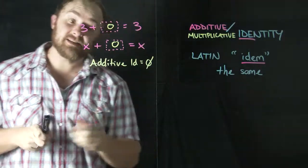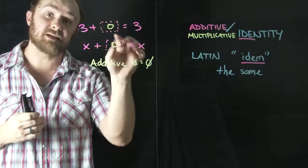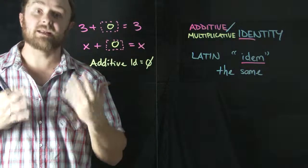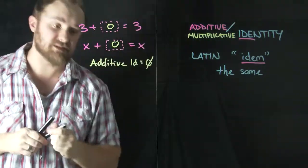Now, when we look at multiplication, it's different because if I multiply a number by zero, it's always zero. Anything times zero is zero. So the multiplicative identity can't be zero.